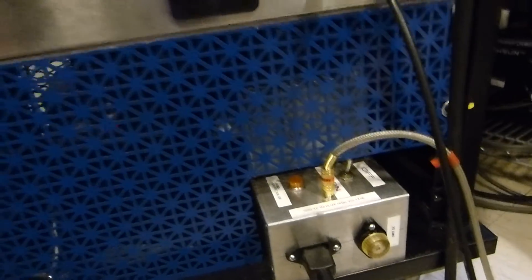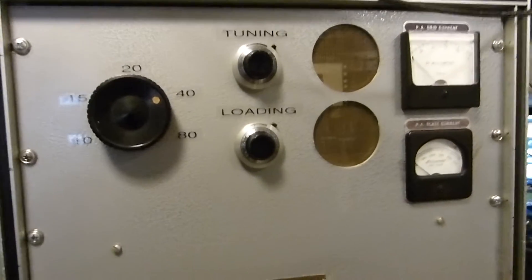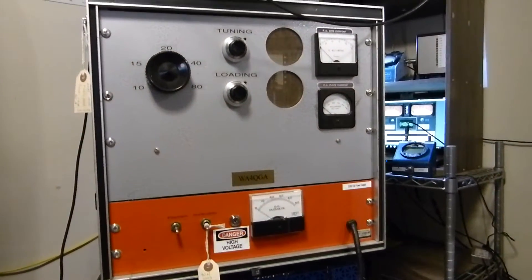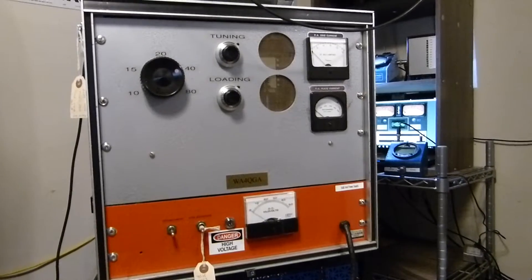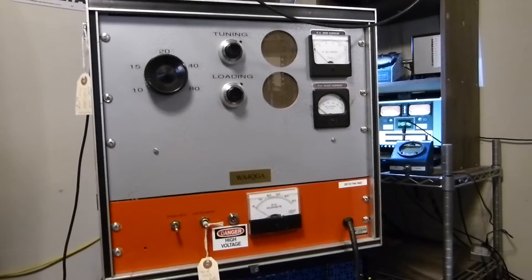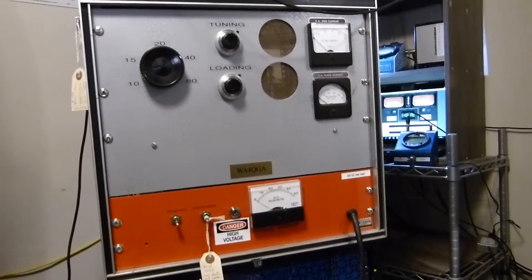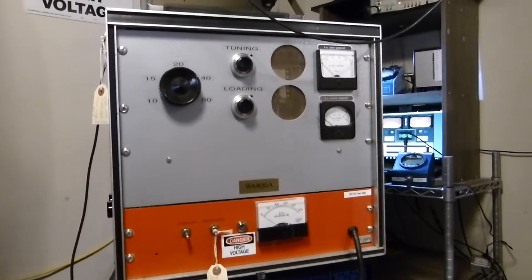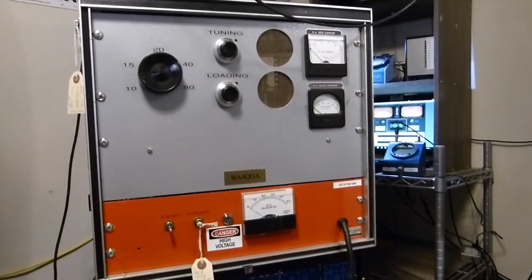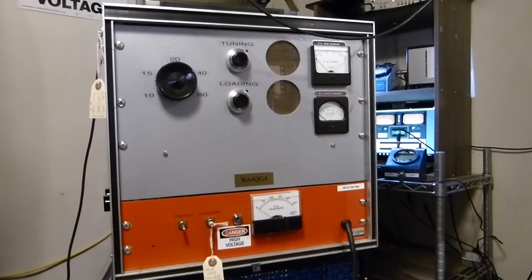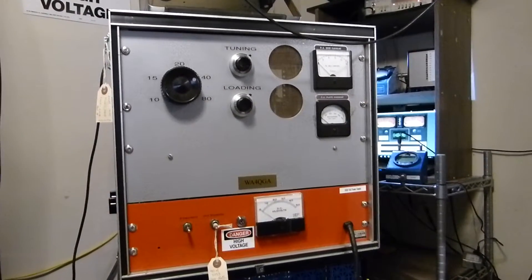And then as we move up here, here's the amplifier itself. It's a single 3-400Z running grounded grid and running Class C. Class C grounded grid is very common, it's actually a lot more common than I realized. Modulating it is a little weird but it works - it actually works quite well. And I get just a little over 500 watts of carrier to the antenna.